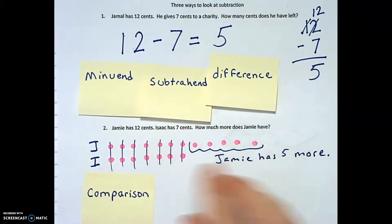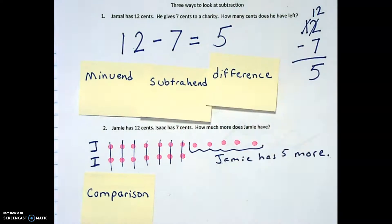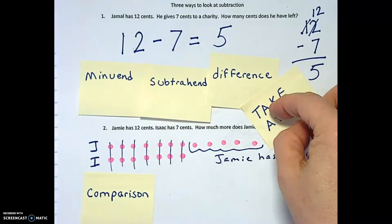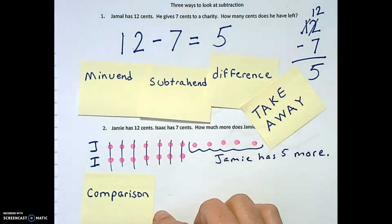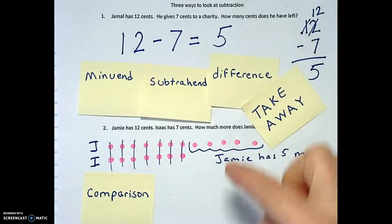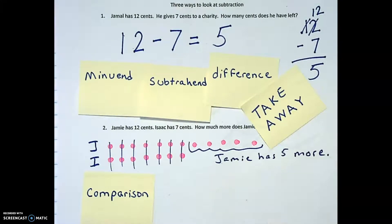The comparison concept. Up above, when Jamal had money and then some of the money went away, we call that the takeaway concept. So takeaway concept, comparison concept. They're similar, but they're not the same. They all, 12 minus 7 gives you the same answer, but there's different ways to process what subtraction means. Taking things away, comparing things, and then I'm going to do one more that'll involve a little bit more vocabulary.